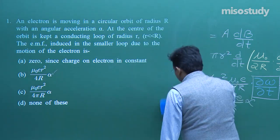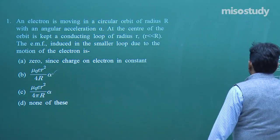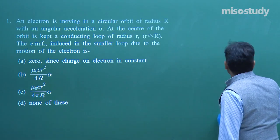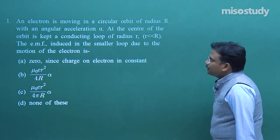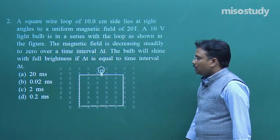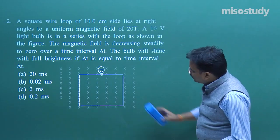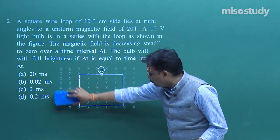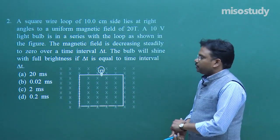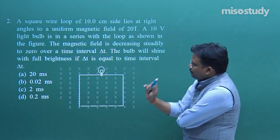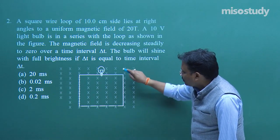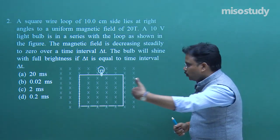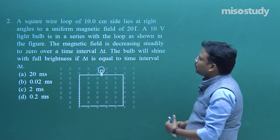With that, we have proven B is the correct option. Let's move ahead to the next problem. I'll clean this space first so we can discuss the next problem. The next question is going to be a very curious one. The diagram is now clearly visible. Those cross marks represent a magnetic field perpendicular to the board, going inside — the standard symbolic representation.